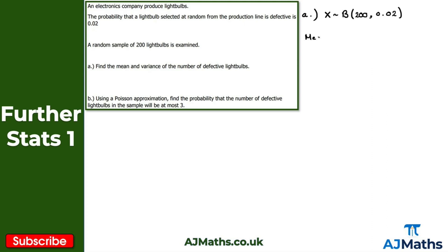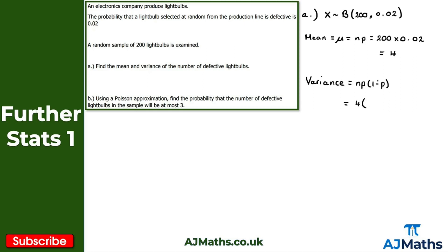For the mean: mu equals np equals 200 times 0.02, which gives 4. For the variance: np(1-p) equals 4 times 1 minus 0.02, which equals 4 times 0.98, giving a variance of 3.92. So the mean is 4 and the variance is 3.92.